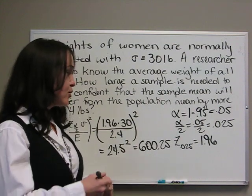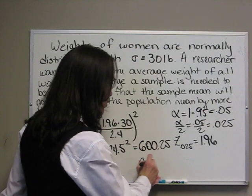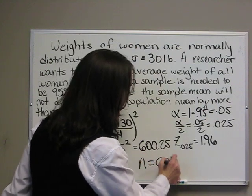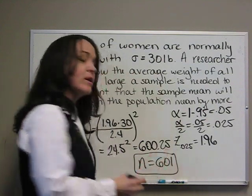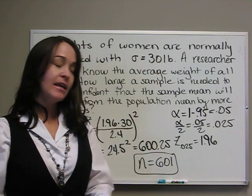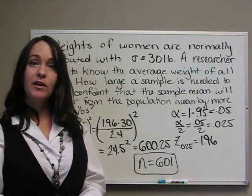So instead of 600.25, we're going to take a sample of 601. We always round up. And that concludes finding the required sample size.